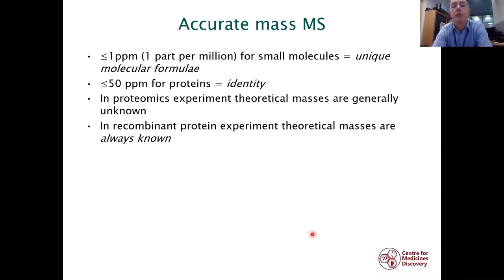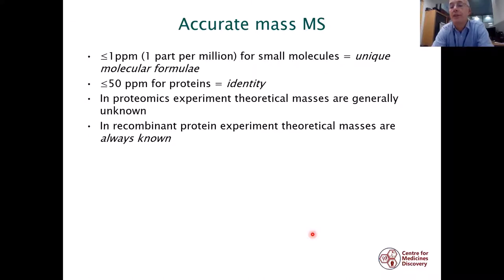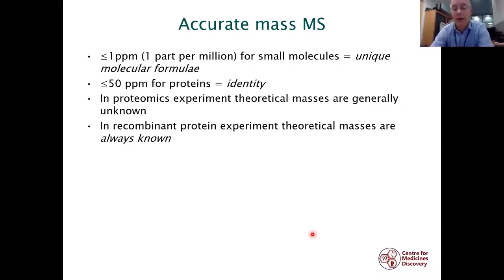We use accurate mass a lot in mass spectrometry for small molecule characterization, where we can get a mass accuracy of one part per million or more. If the molecule is small enough, this allows us to determine a unique molecular formula. We can't normally achieve that degree of accuracy with intact proteins — more normally we would see about 50 parts per million or less — but that is sufficient to identify the protein, meaning its covalent structure. In a proteomics experiment the theoretical masses are generally not known, but in a recombinant protein experiment we will always know what sequence we're looking for, so the theoretical mass is always known, and that is crucial to the method.